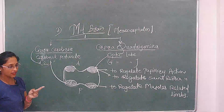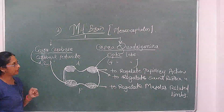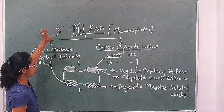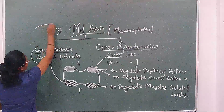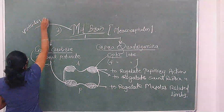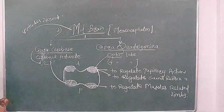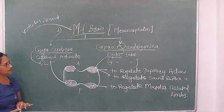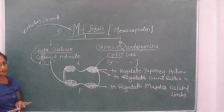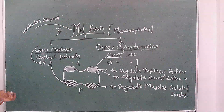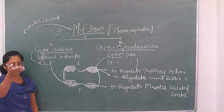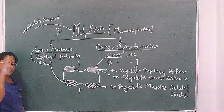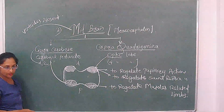The midbrain also regulates muscles related to the limbs, whether four limbs or hind limbs. Importantly, ventricles are completely absent in the midbrain. The midbrain is the smallest part of the brain. Additionally, corpora quadrigemina plus crura cerebri together form the brain stem along with the hindbrain.